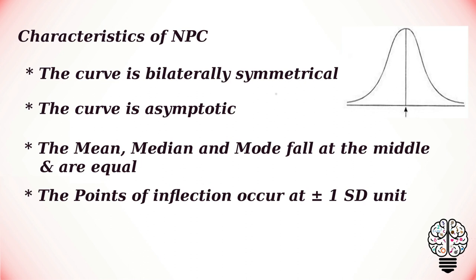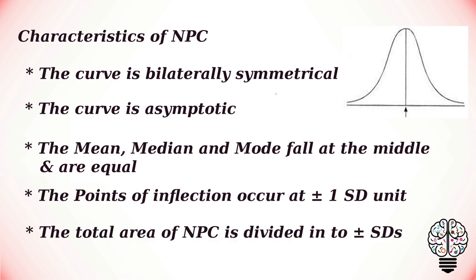The curve changes from convex to concave in relation to the horizontal axis. The total area of normal probability curve is divided into plus or minus standard deviations. The total of normal probability curve is divided into 6 standard deviation units.